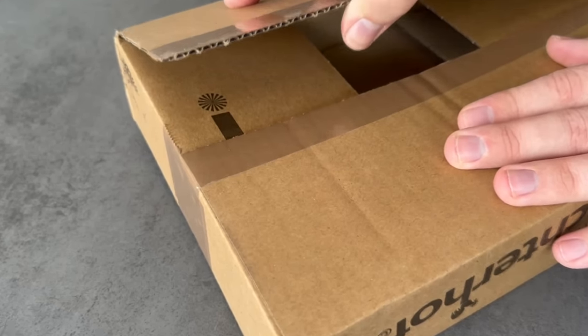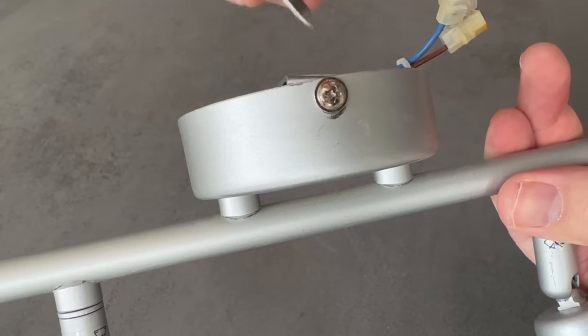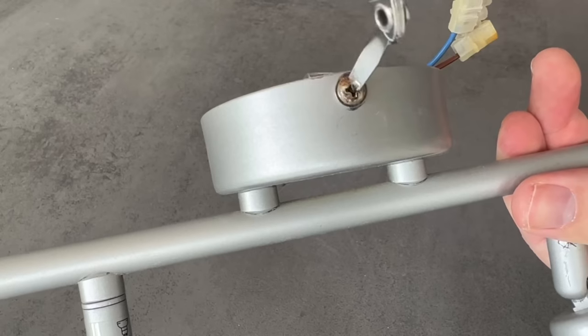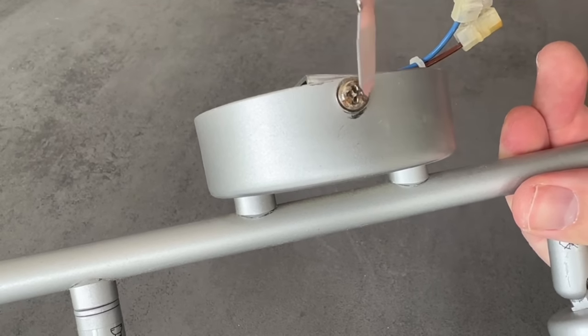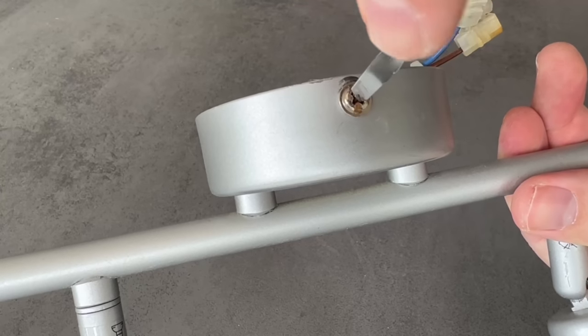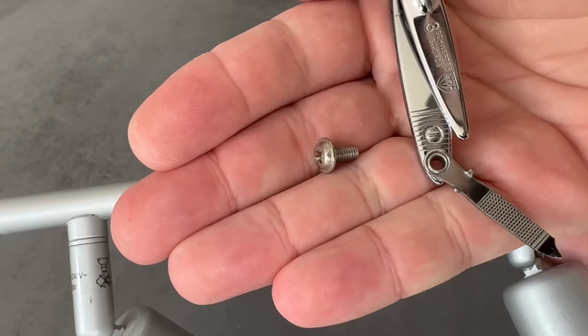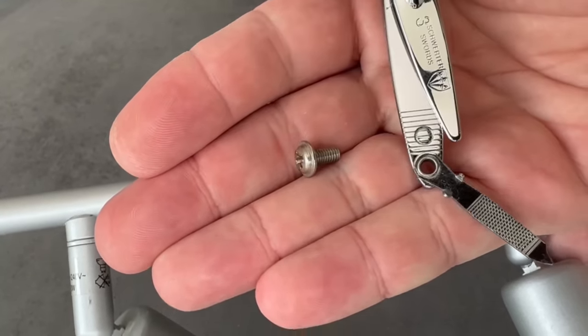And if you don't have a screwdriver at hand but you need to unscrew a small screw then you can also use this part of the nail clipper. Because it usually fits wonderfully in such small screws. You can remove them quickly without having to look for the right tool.